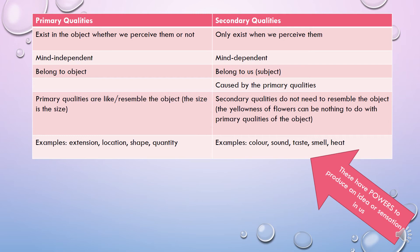Primary qualities exist in the object whether we perceive them or not, because they are mind-independent and belong to the object. Importantly, primary qualities resemble the object — our ideas of them are like the object itself. Examples of primary qualities are extension (how much space an object takes up), location, shape, and quantity.